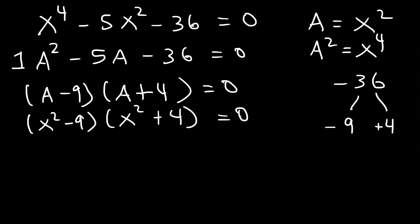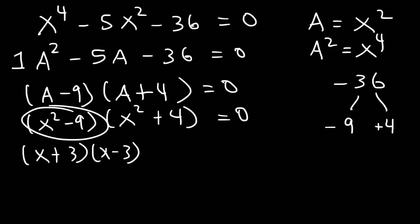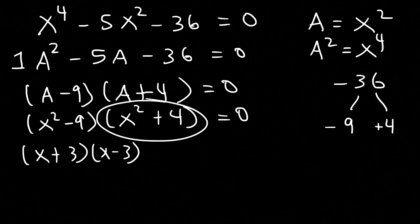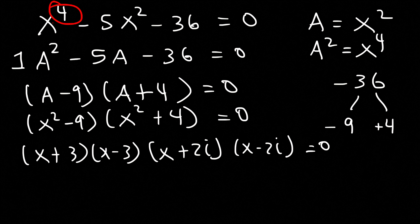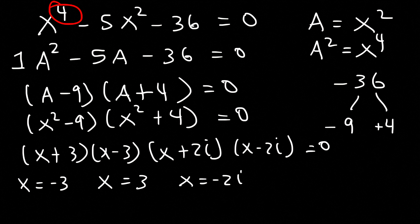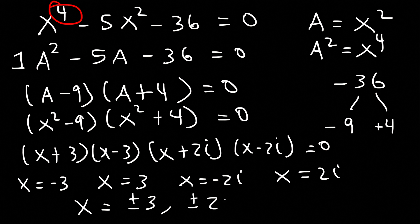Now you can factor x squared minus 9 — it's going to be x plus 3 and x minus 3, a difference of perfect squares. If you have a sum of perfect squares you can factor it using imaginary numbers, so x squared plus 4 becomes x plus 2i and x minus 2i. Because it's a polynomial of degree 4 there are four answers: two real and two imaginary. So x is equal to plus or minus 3 or plus or minus 2i.